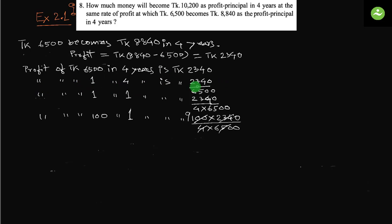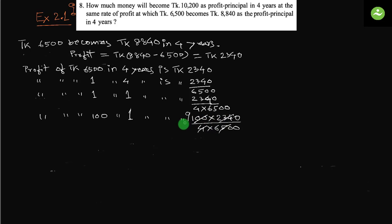Profit of taka 1 in four years is taka 2340 divided by 6500. Profit of taka 1 in one year is 2340 divided by (4 × 6500). So profit of taka 100 in one year is 100 × 2340 divided by (4 × 6500). If we simplify, we get 9.